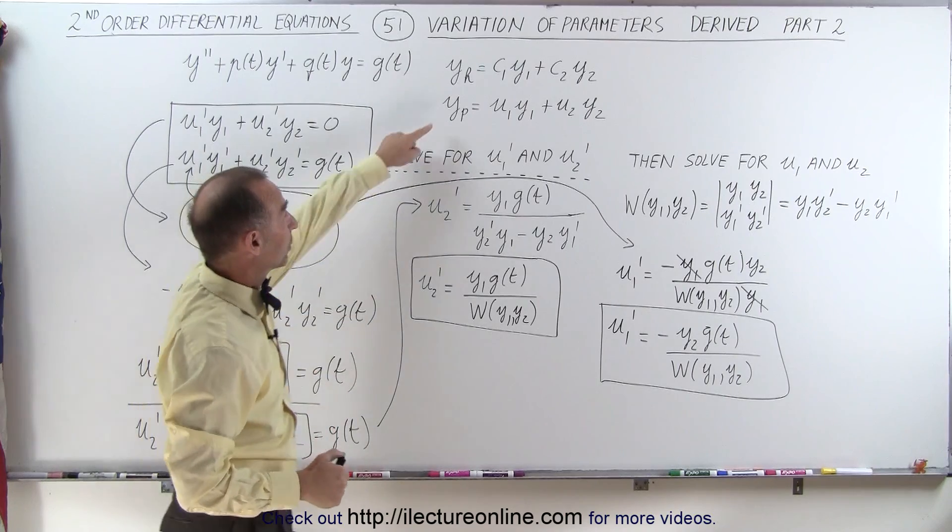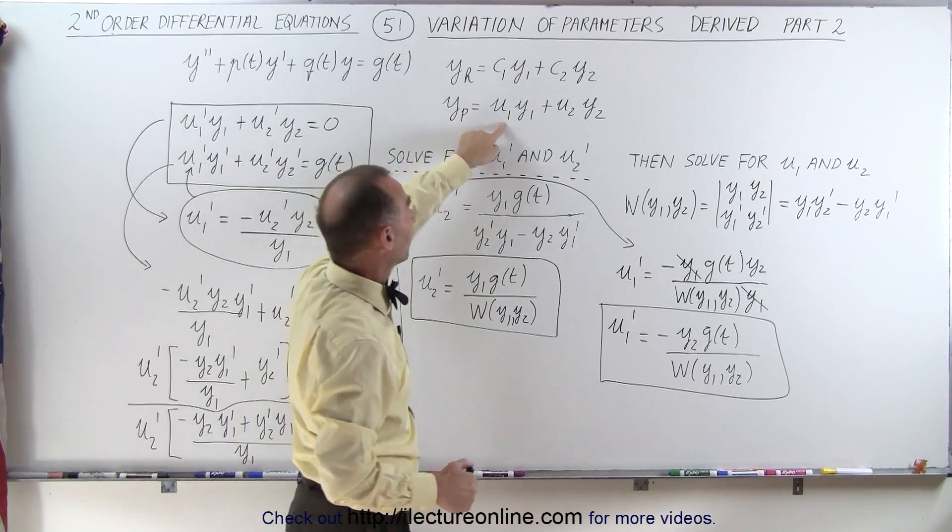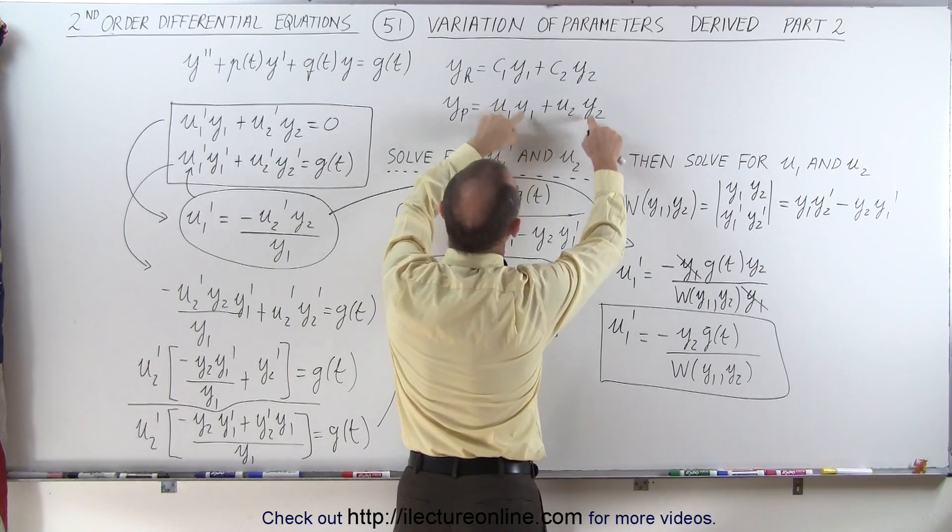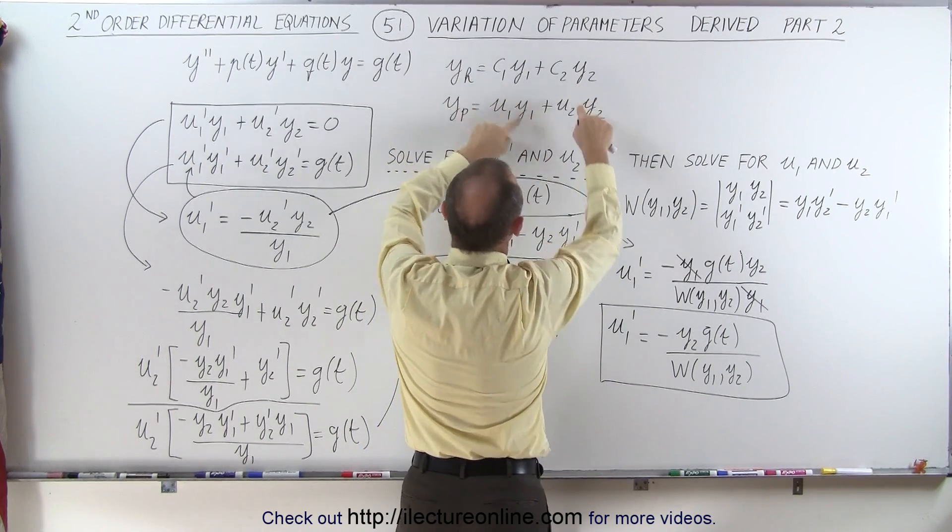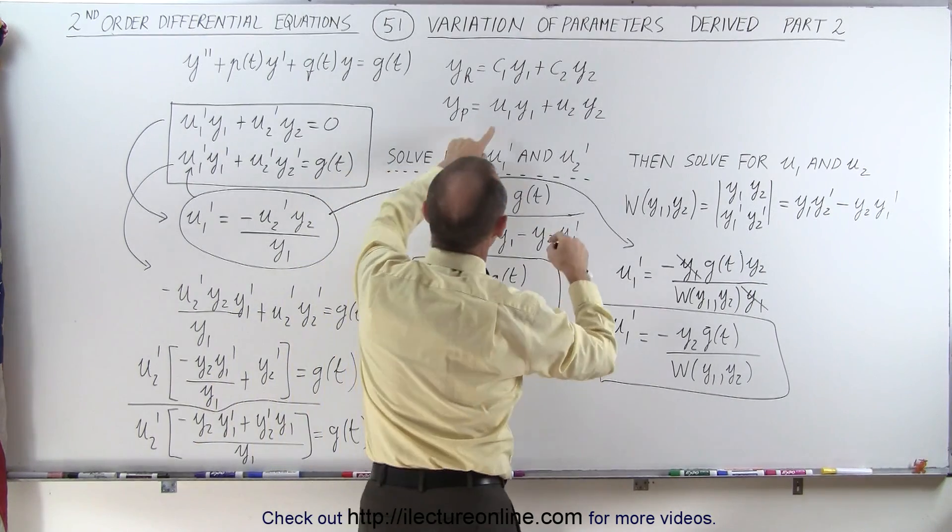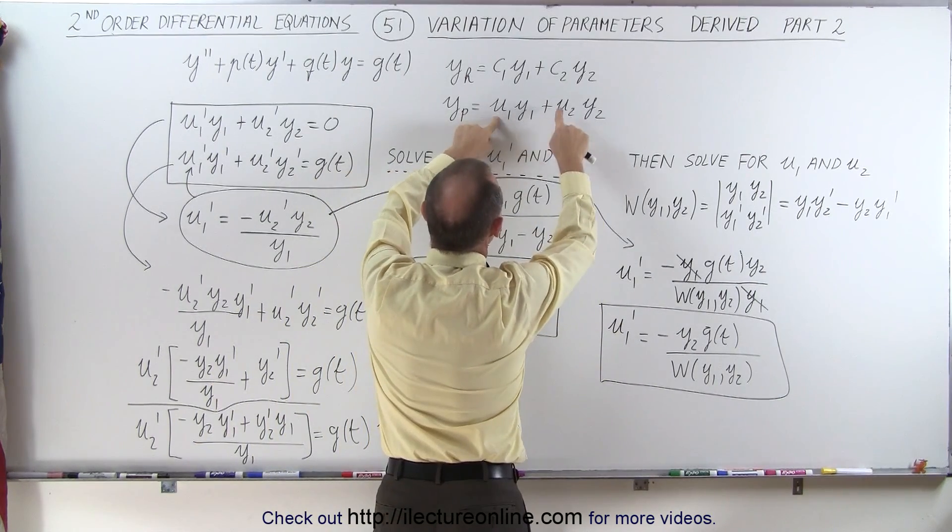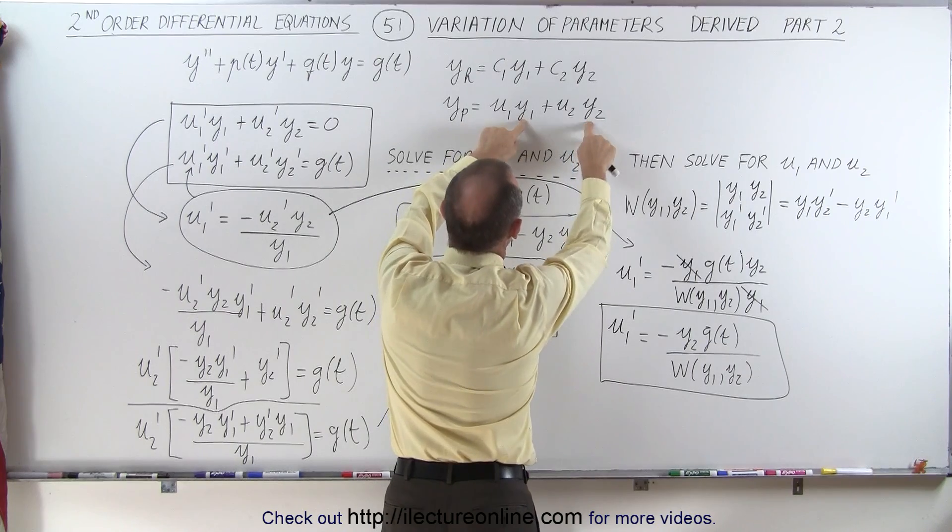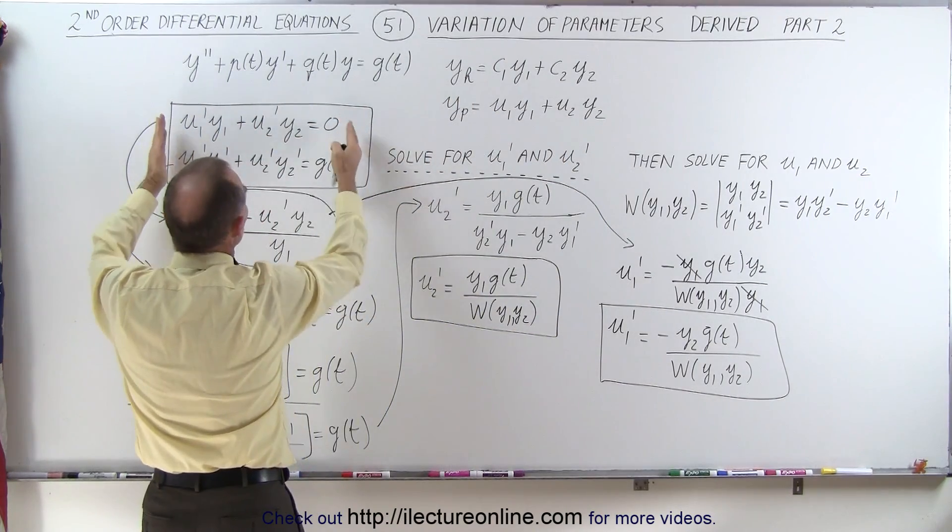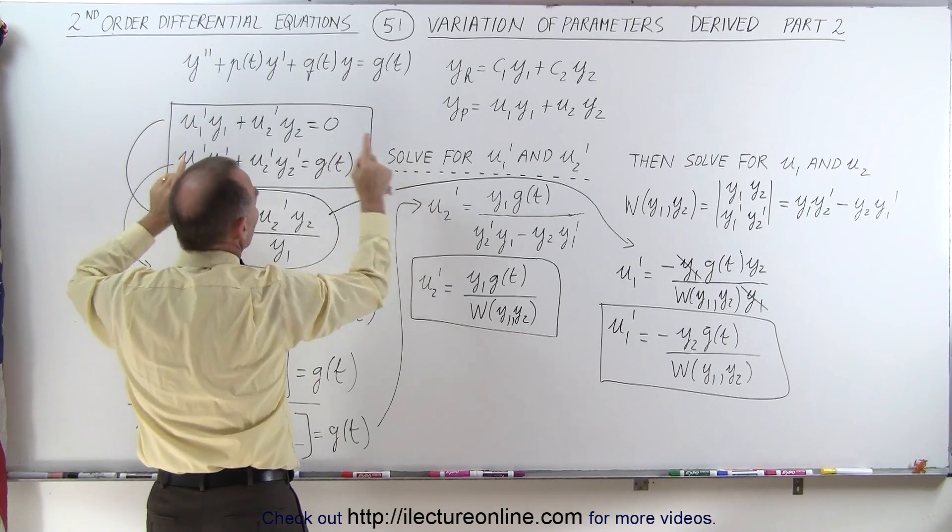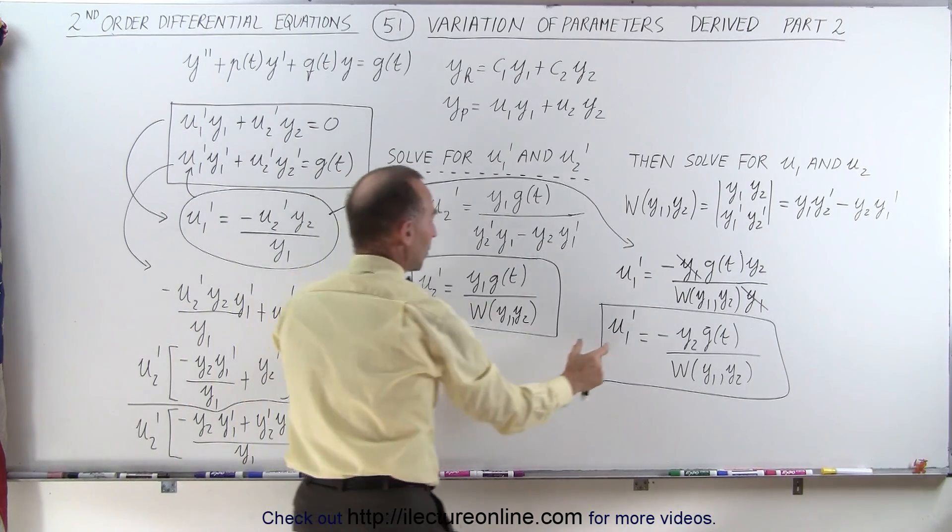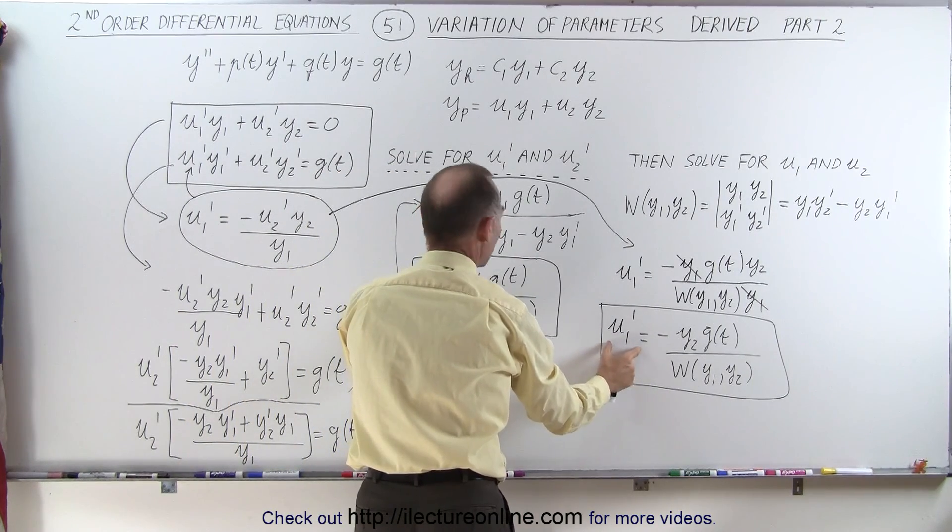So remember, to find the particular solution, which we said was going to be in this format, the y1 and y2 are going to be the solutions of the homogeneous part of the equation. We'll show you later how to find those. And then it all comes down to finding u1 and u2 once y1 and y2 are known. And here, we've shown you that starting with these two linear equations, we can solve for u1' and u2'. We've just shown you how to do that, to come up with two equations to find u2' and u1'.